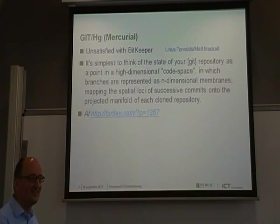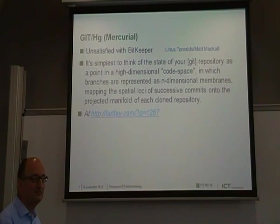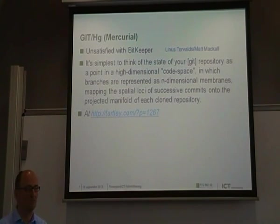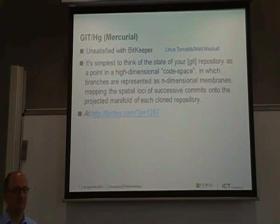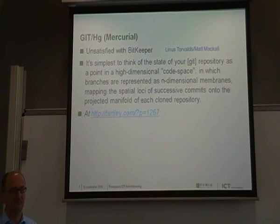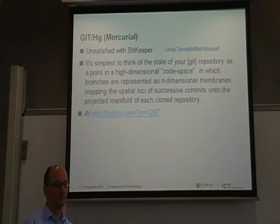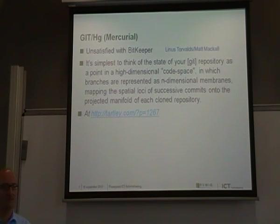I think the problem was that Andrew Tridgell, who is the original rsync developer or maybe one of the Samba guys, started reverse engineering the BitKeeper protocol, and then BitKeeper had to retract the license for the Linux project. So Linux worked without version control at all for a few weeks or months. And Linus and Matt started at roughly the same time to build their version control systems, but that was after the BitKeeper license was retracted because Tridgell started reverse engineering the protocol.